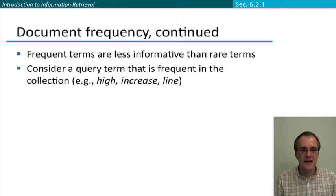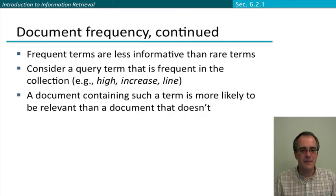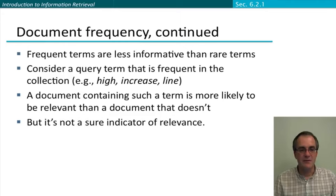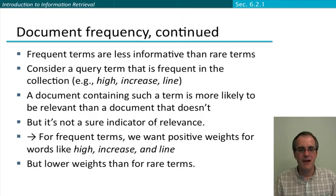On the other hand, frequent terms are less informative than rare terms. Consider a term that is frequent in the collection, like high, increase, line, which might occur in lots of documents. A document containing such a term is more likely to be relevant than a document that doesn't, if the query contained one of those terms. But it's not such a sure indicator of relevance. So for frequent terms, we want to give positive weights for a document matching a term in the query, but lower weights than for rare terms.